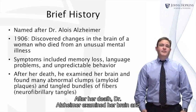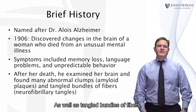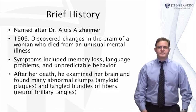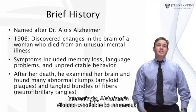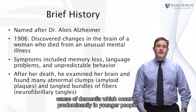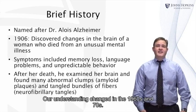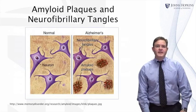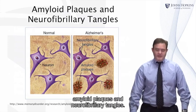After her death, Dr. Alzheimer examined her brain and found many abnormal clumps, which we now know as amyloid plaques, as well as tangled bundles of fibers, which we now know as neurofibrillary tangles. Interestingly, Alzheimer's disease was felt to be an unusual cause of dementia, which occurred predominantly in younger people. Our understanding changed in the 1960s and 70s, and we now recognize Alzheimer's disease as the most common cause of dementia.